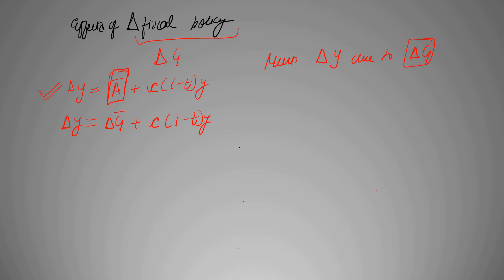So change in y is equal to change in autonomous government spending plus c(1 minus t)y. Again, taking this y to left hand side, we get y(1 minus c(1 minus t)) is equal to change in g, and y is equal to...